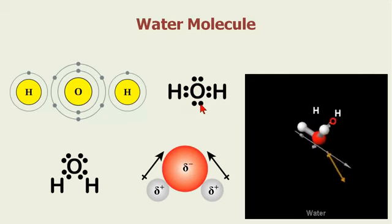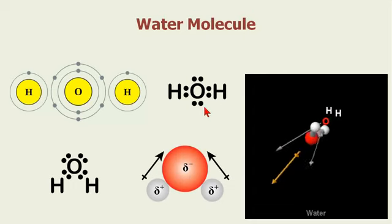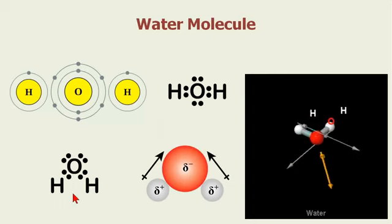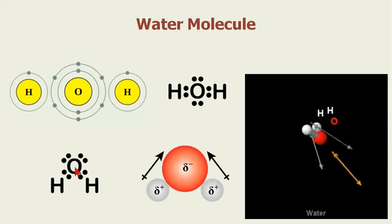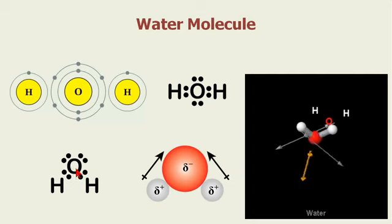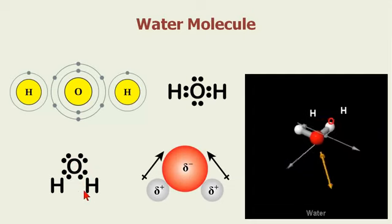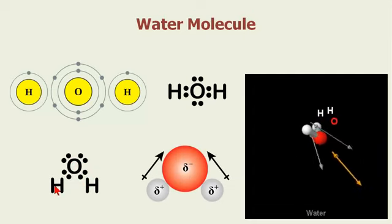We could also look at this Lewis dot diagram as almost a tetrahedral-type shape, where if you look at this in 3D, all legs of the tetrahedral are equally balanced. So on four sides there are electrons, and on two sides there happens to be hydrogen atoms connected to them.